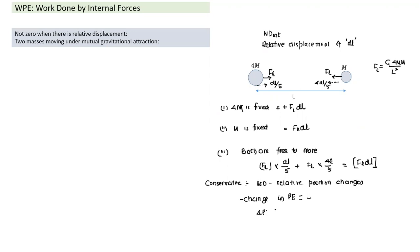Change in potential energy = −FL·dL = − G·4m·m / L² · dL in all three cases. That is the change in gravitational potential energy.